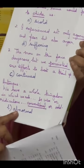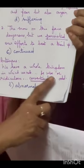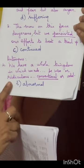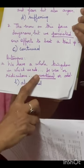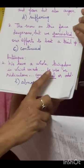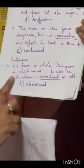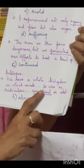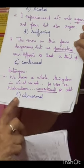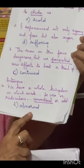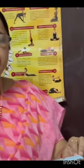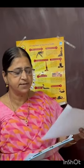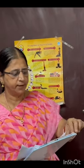Now we move on to antonyms. 'We have a whole kingdom in which we rule — be wise or ridiculous, conventional or odd.' The underlined word is 'conventional.' The antonym is 'abnormal.' According to your book, conventional means normal, so the antonym is abnormal.